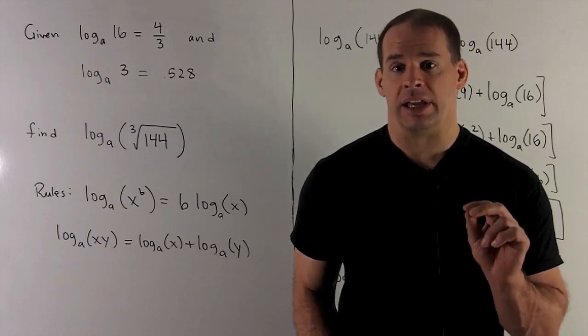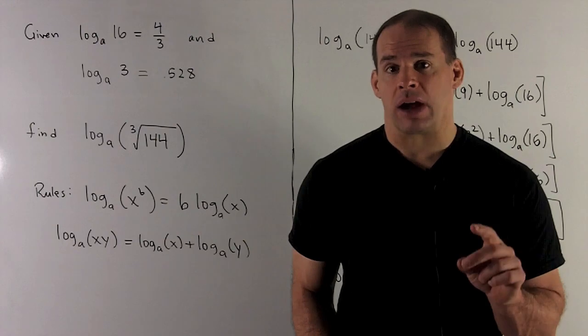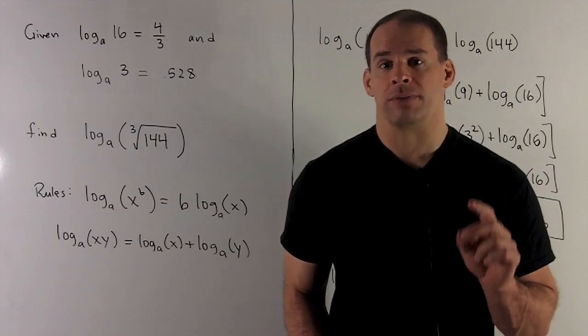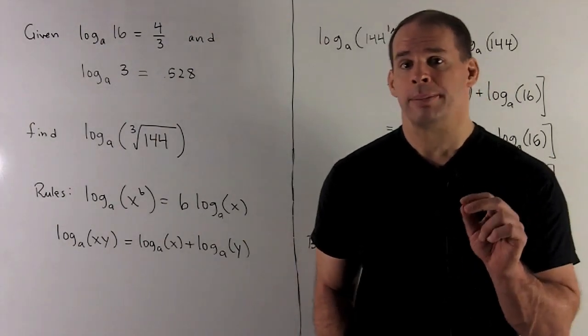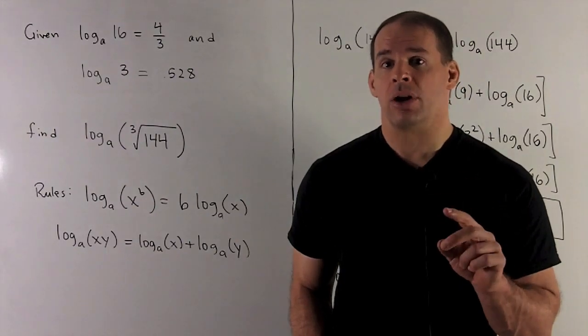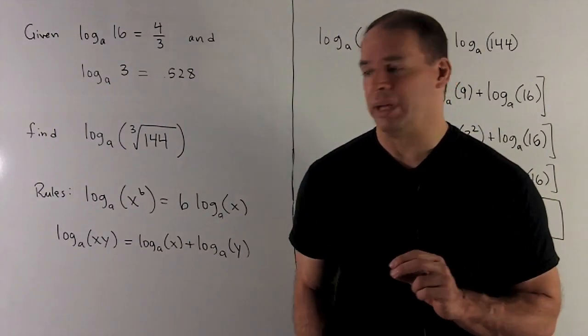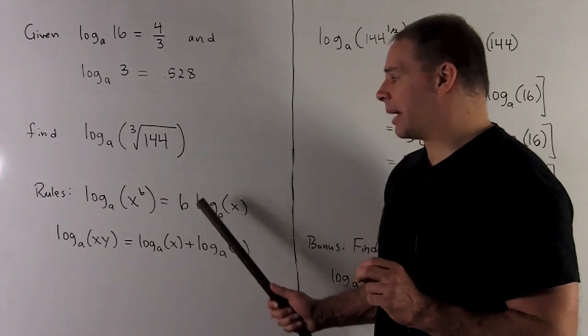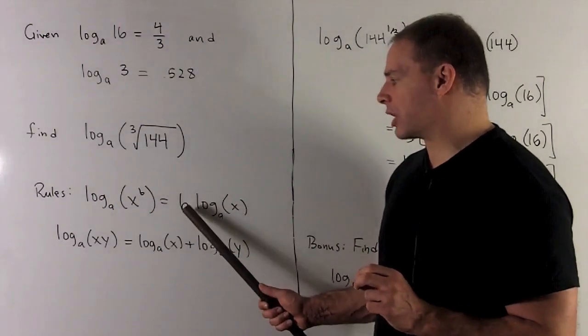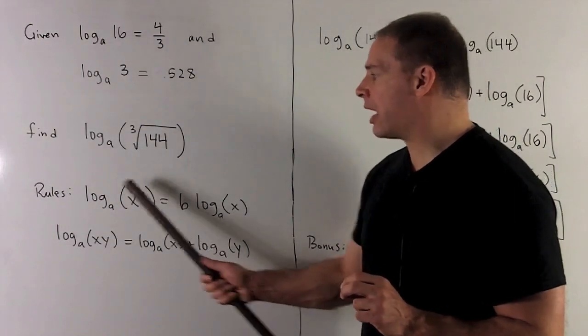To do this, we're going to need two identities for logarithms. First, if I take the logarithm, base a, of a number raised to power b, I'm allowed to take that power and bring it down in front of our expression. So it moves from there to there.